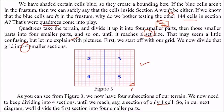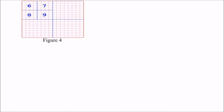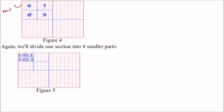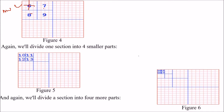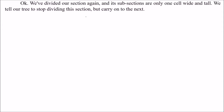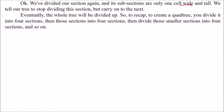In the next diagrams, we divide the first section — the upper left, also called north-west — into four smaller parts, numbering them 6, 7, 8, 9. We divide section 6 into four parts numbered 10 to 13. Then we divide node 10, giving us leaves 14, 15, 16, 17. As we have reached a single cell, those subsections are only one cell wide and tall. We tell our tree to stop dividing this section and carry on to the next, until eventually the whole tree is divided up.